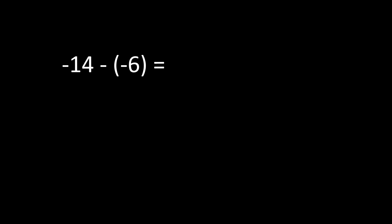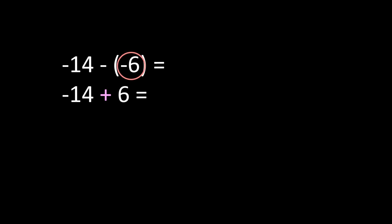Those rules say to keep that first integer exactly how it is, so negative 14 stays negative 14. The subtraction sign we change to an addition sign. And we change the sign of the second integer — it was negative 6, so we change it to a positive 6. Now we have negative 14 plus 6, which is adding integers with different signs.